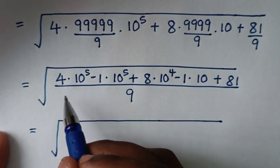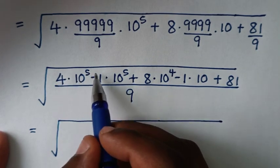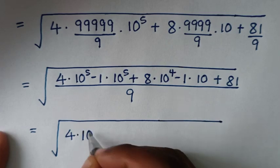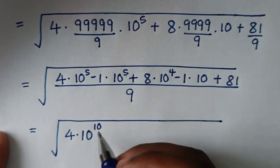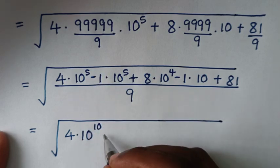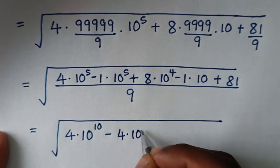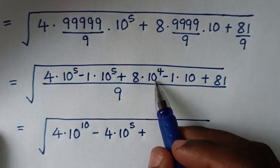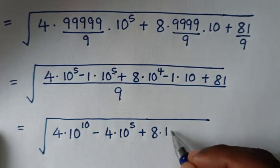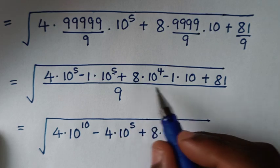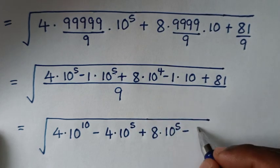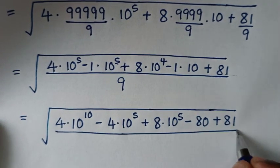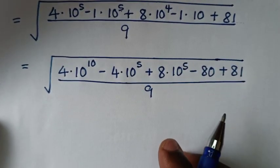We take 4 times 10 to the power 5 times 10: that gives 4 times 10 to the power 10. Then 4 times 10 to the power 5 times negative 1 gives minus 4 times 10 to the power 5. Then 8 times 10 times 10 to the power 4 gives 8 times 10 to the power 5. Then 8 times 10 times negative 1 gives minus 80. Then plus 81, all over 9.